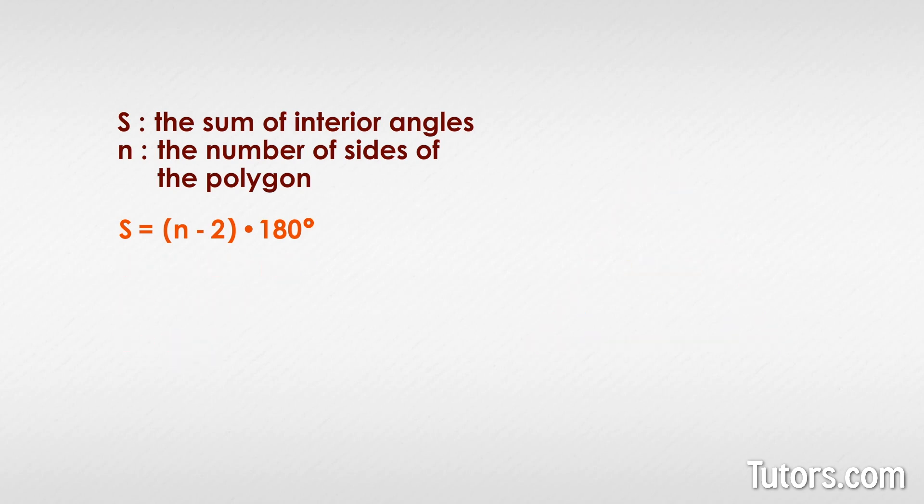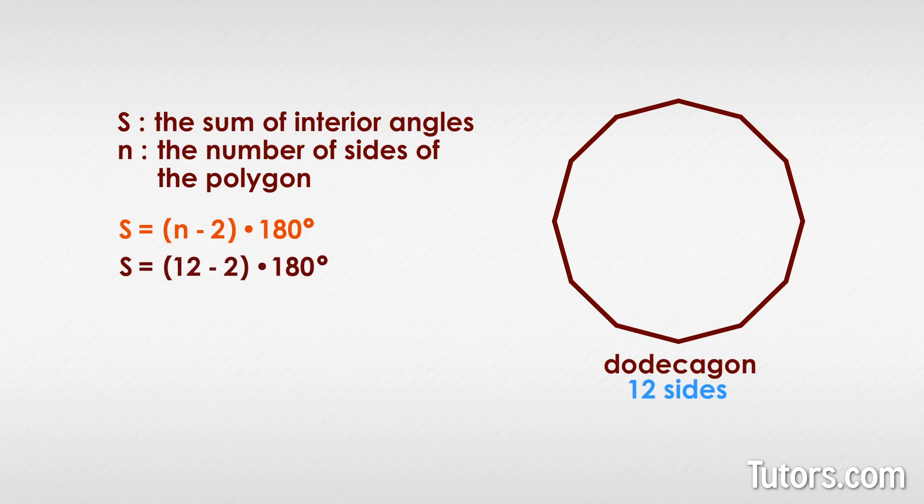Well, that worked, but what about a more complicated shape like a dodecagon? It has 12 sides. So we have S equals 12 minus 2 times 180 degrees. We do the math, and we get S equals 1800 degrees. How do we know that is correct?